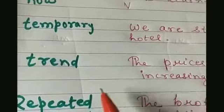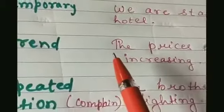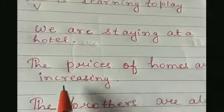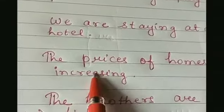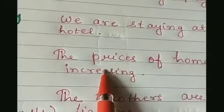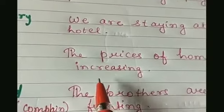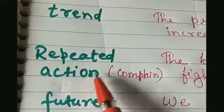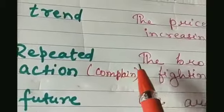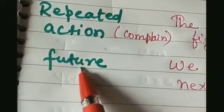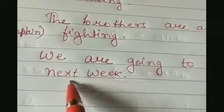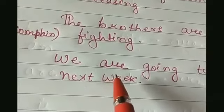Present continuous tense is used for trends — things which are changing — like the prices of homes are increasing. It is used for repeated actions when we are complaining about somebody, like the brothers are always fighting. Finally, to denote an action we will do in the future and are sure about, we also use present continuous tense — like we are going to America next week.